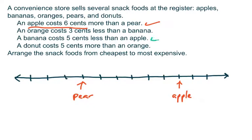So going to the next row, it says a banana costs five cents less than an apple. Now this is helpful because I do know where the apples are, and if the bananas cost five cents less, I just count five places to the left, one, two, three, four, five, and that tells me that the banana would belong right here, five places to the left of the apple.